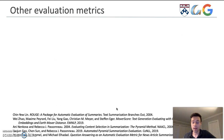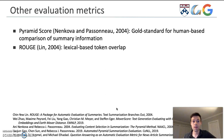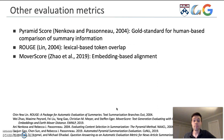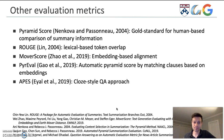To compare our metric against others, we also compare it against the pyramid score — the gold standard for human-based comparison of summary information — though it's not directly comparable as it is a manual evaluation using experts, whereas ours is fully automatic. We also compare against ROUGE, the popular n-gram overlap metric; Mover Score, which scores summaries based on embedding-based alignment; PIRVAL, a metric which automates the pyramid score by matching clauses based on their embeddings; and APES, the cloze-style QA approach I mentioned earlier.